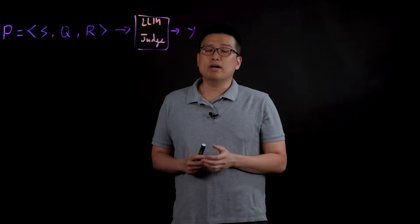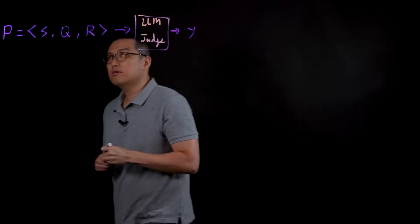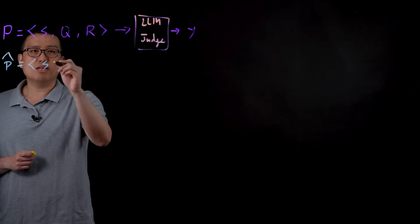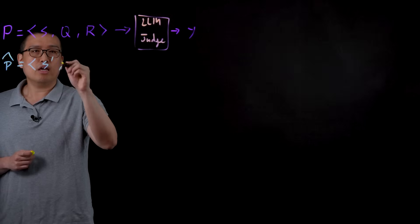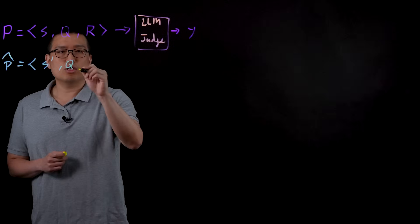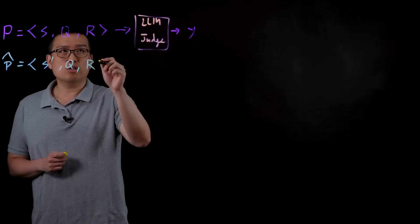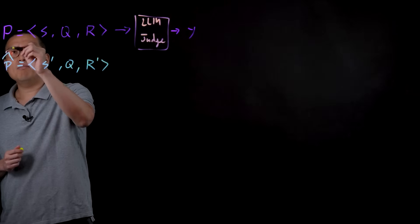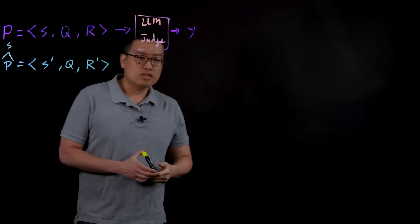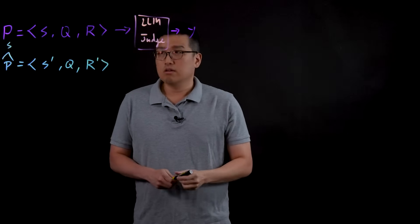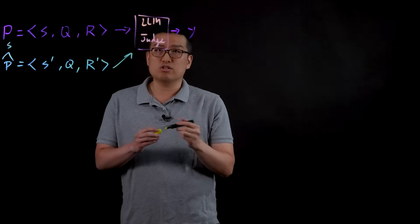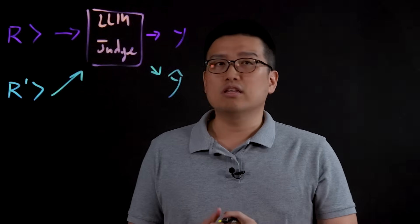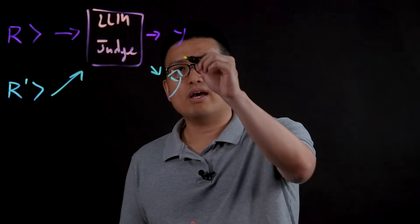To study the fairness of LLM as a judge, we specifically design an alternative prompt that we call P hat. So this P hat is constructed by perturbing the system instruction to S prime while keeping the same query Q, and then we also change the response from R to R prime. We made the modification to P such that P and P hat should be semantically equivalent, basically the same type of question but with different contexts. And then we feed this P hat to the same LLM as a judge and obtain a prediction Y hat. So in an ideal world, if the LLM as a judge is fair and consistent, we expect Y equals to Y hat.